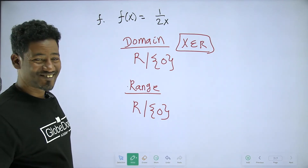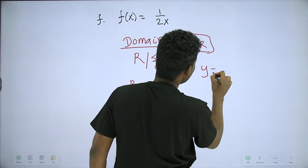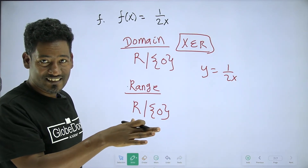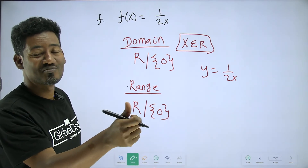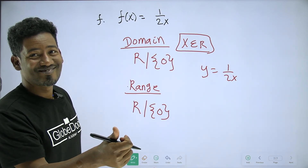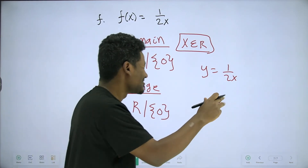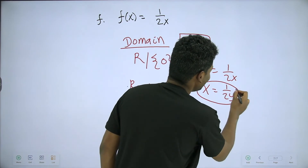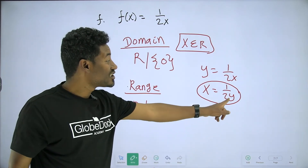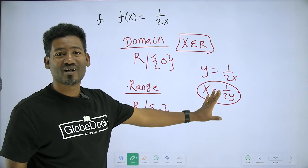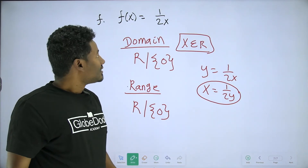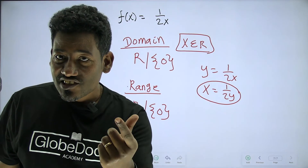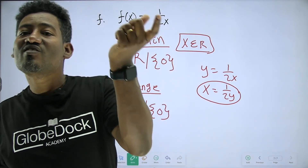Domain: all real numbers except 0. If you simplify it directly — x is equal to 1 over 2y. If y equals zero, that would mean 1 over zero, which is undefined. So for the range, you can see the inverse of the domain.